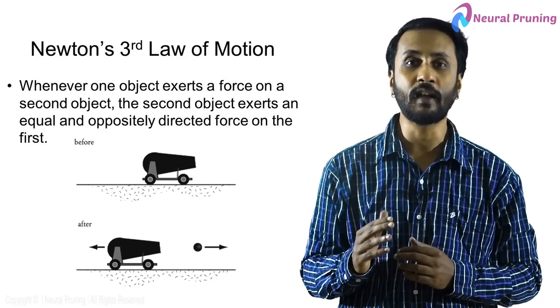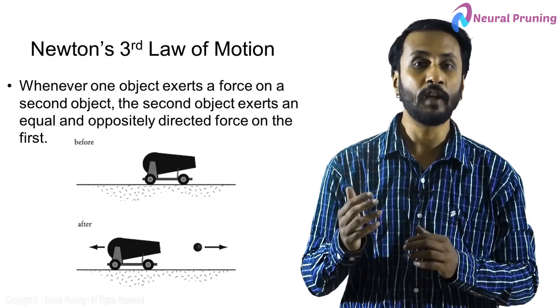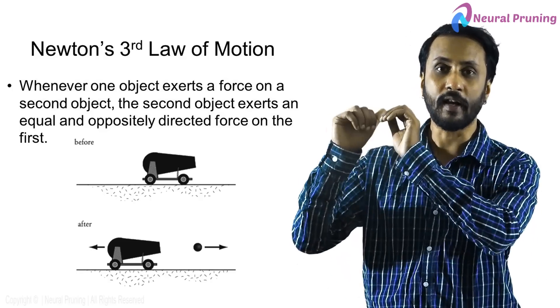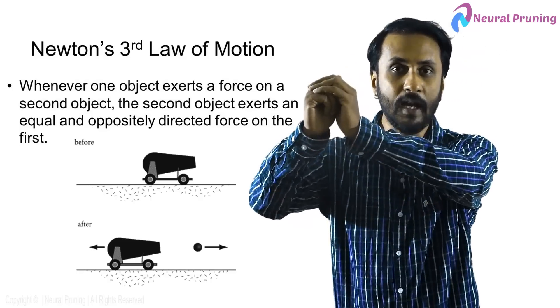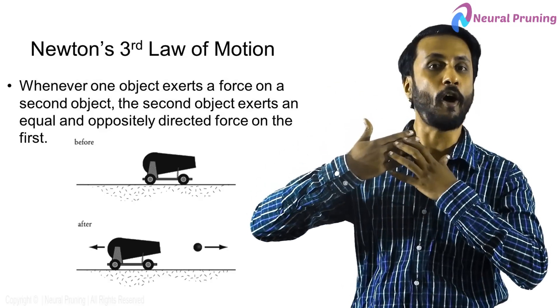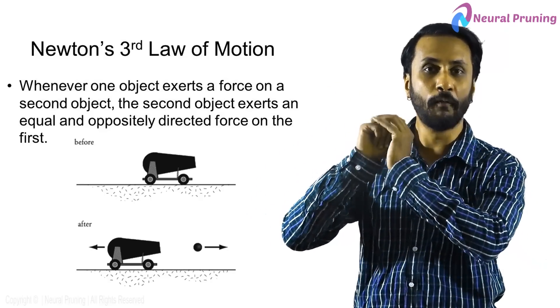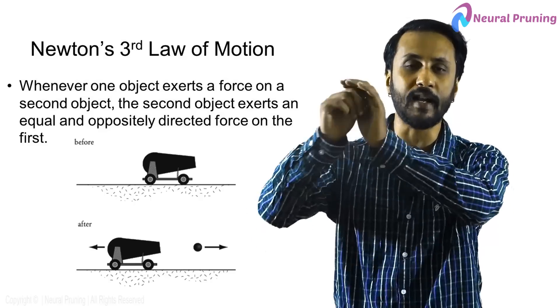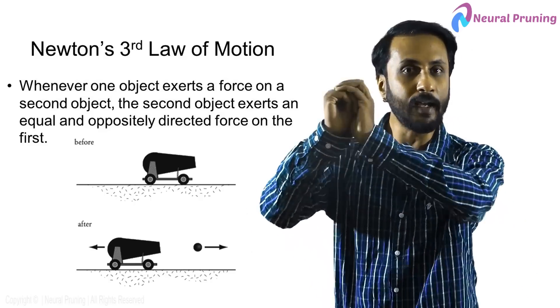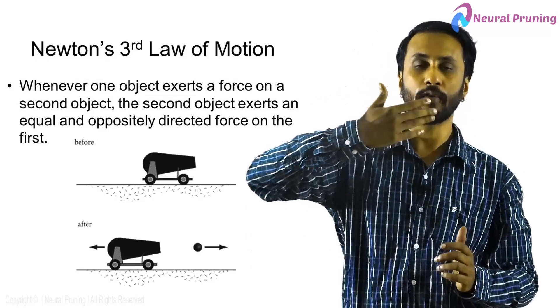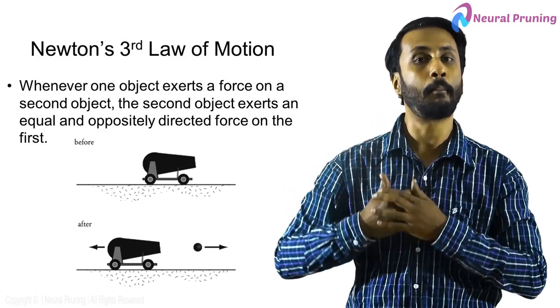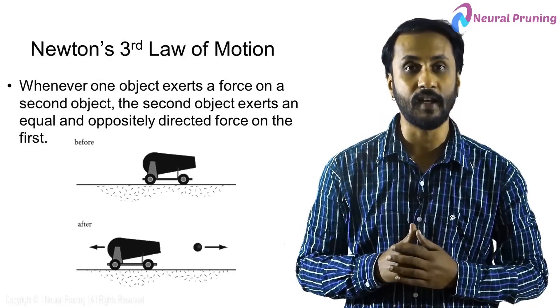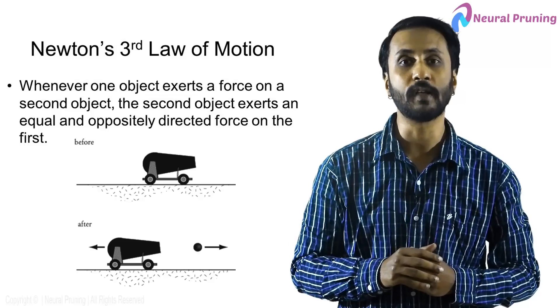The third law states that for every action there is an equal and opposite reaction. If you apply a minimal force on a branch, the branch tries to push you in the opposite direction. You are applying force in the x-axis and the branch pushes you back in the minus-x direction. So all three laws can be applied in this example.